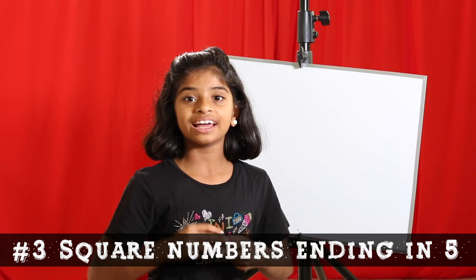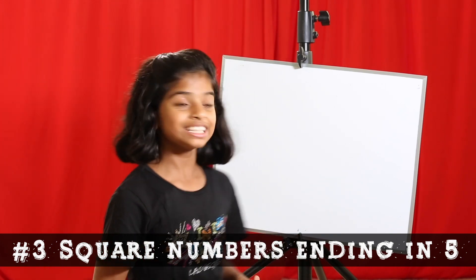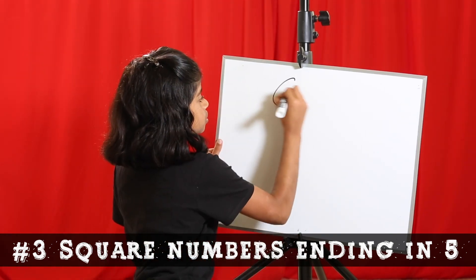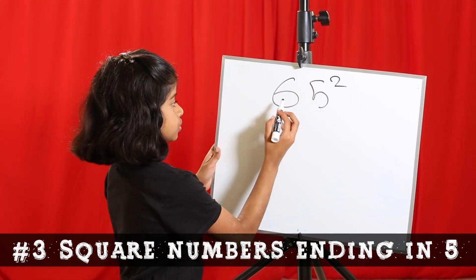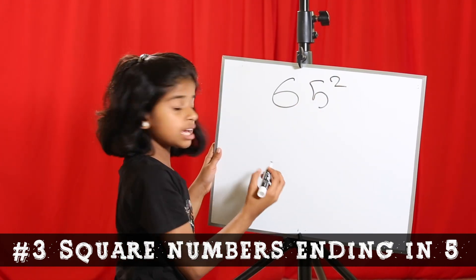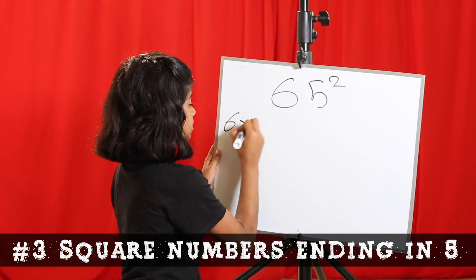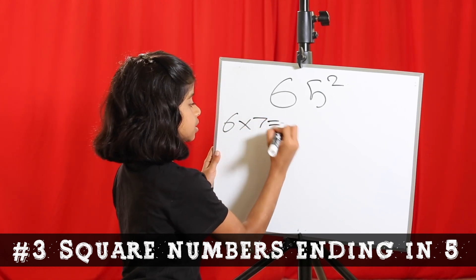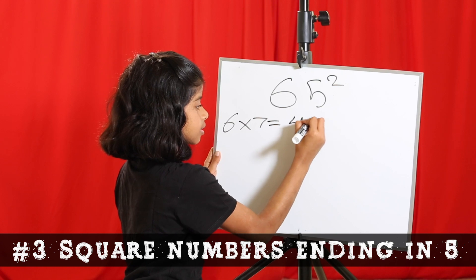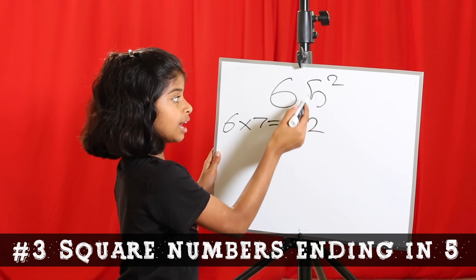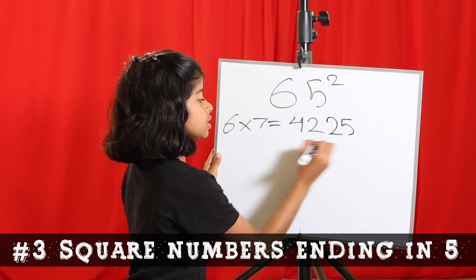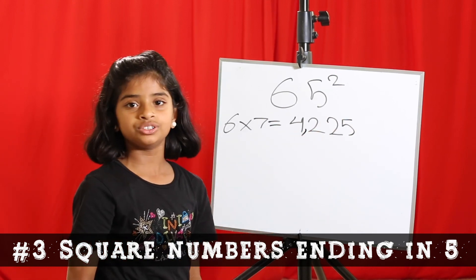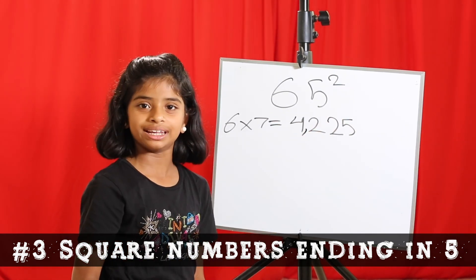Now, let me take the number I told you in the beginning, 65. So we're going to do 65 square. So 6, the next number is 7. So it's going to be 6 times 7 equals 42. Now, ending in 5 always ends with 25. So the answer is 4,225, like I said in the beginning.